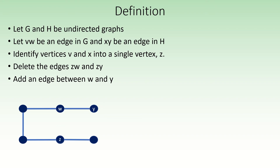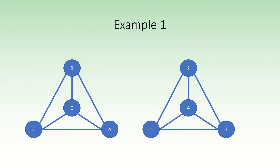That's all there is to it. Let's work through a few more examples to get the hang of this operation. Suppose we have two complete graphs on four vertices. What we must do is choose two edges for our Hayosh construction. Let's choose a, b and one, two.